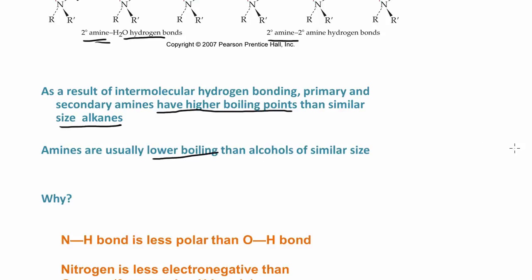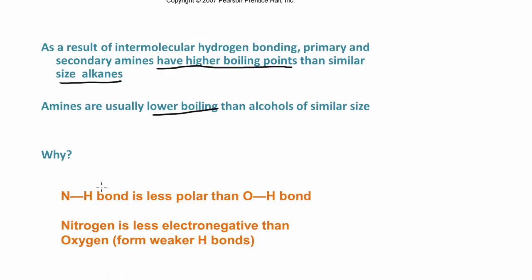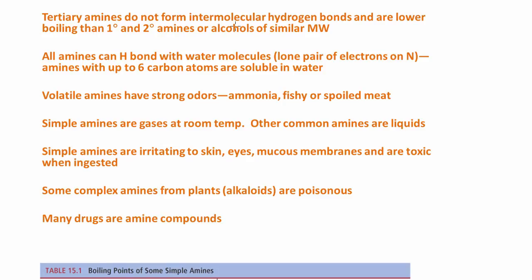As a result of this intermolecular hydrogen bonding, secondary and primary amines are going to have higher boiling points than similar-size alkanes. Amines are usually lower boiling than alcohols of similar size — that's because the nitrogen-hydrogen bond is less polar than the oxygen-hydrogen bond, since nitrogen is less electronegative than oxygen, forming weaker hydrogen bonds. Tertiary amines do not form intermolecular hydrogen bonds and are lower boiling than primary and secondary amines, and also lower boiling than alcohols of similar molecular weight. However, all amines — primary, secondary, and tertiary — can hydrogen bond with water molecules because of that lone pair of electrons on the nitrogen.